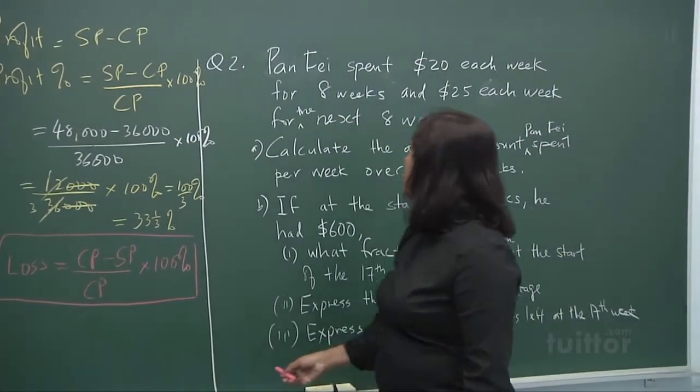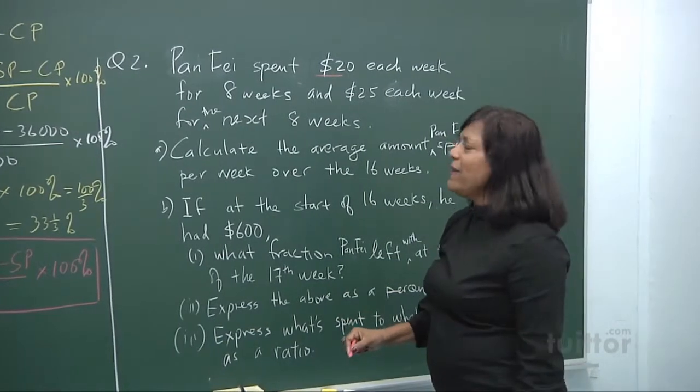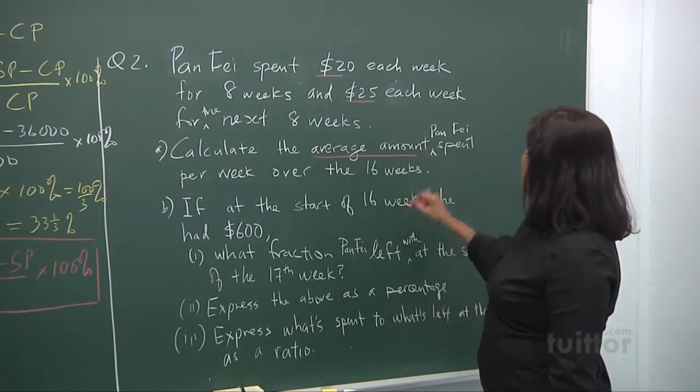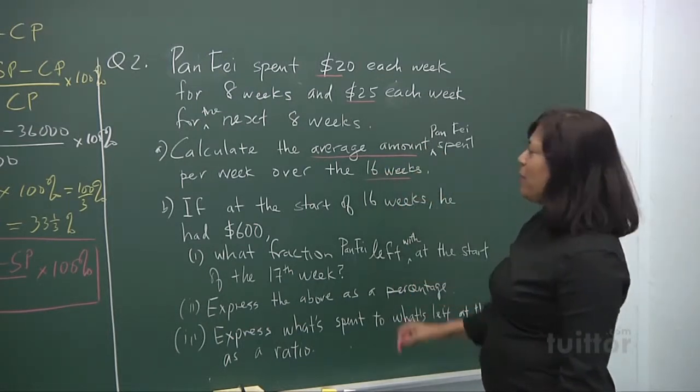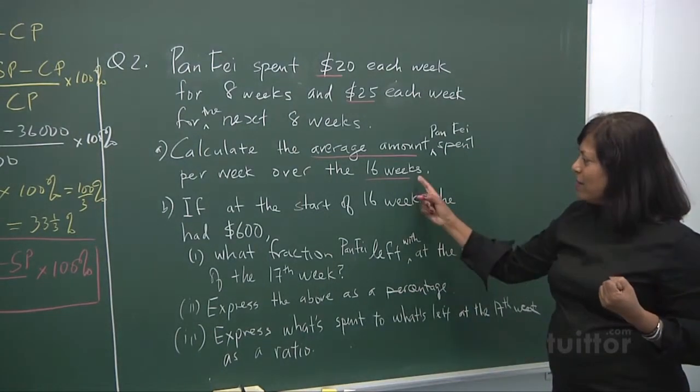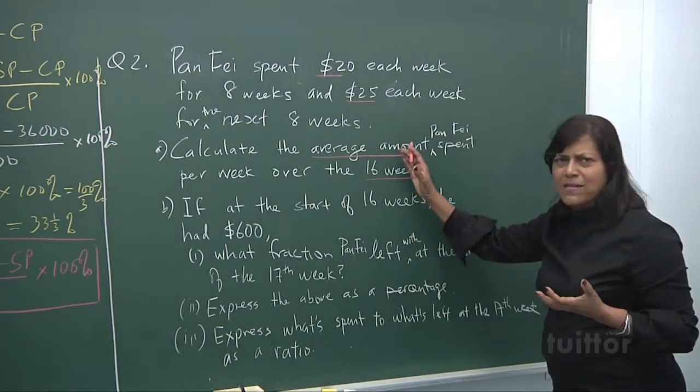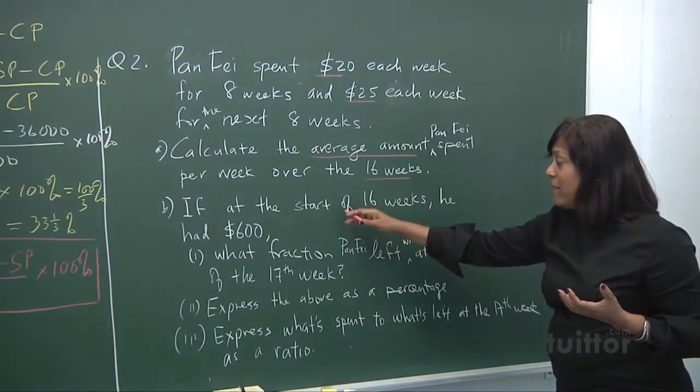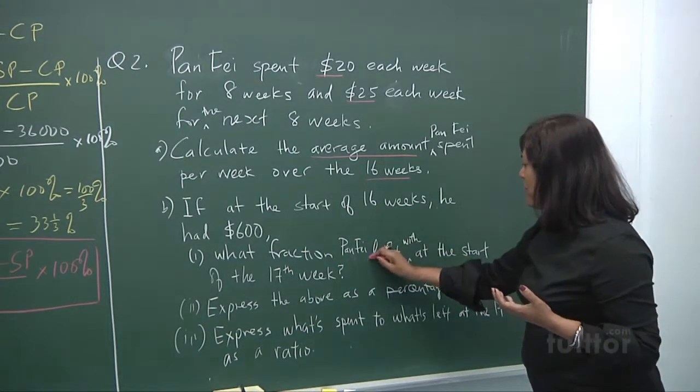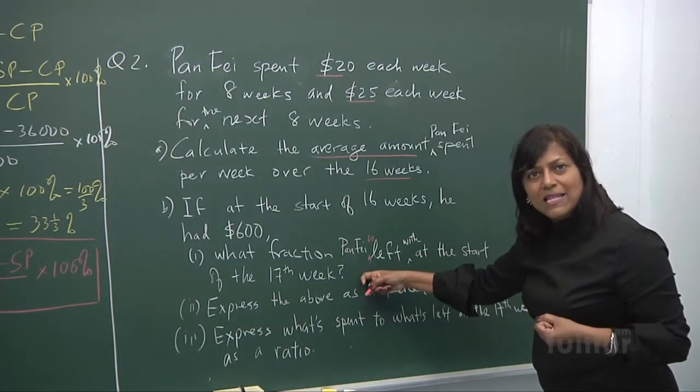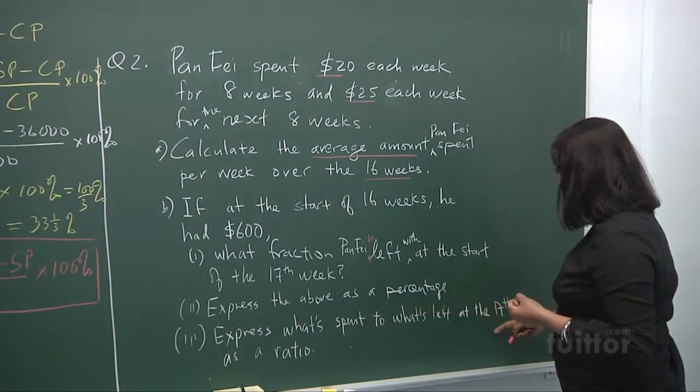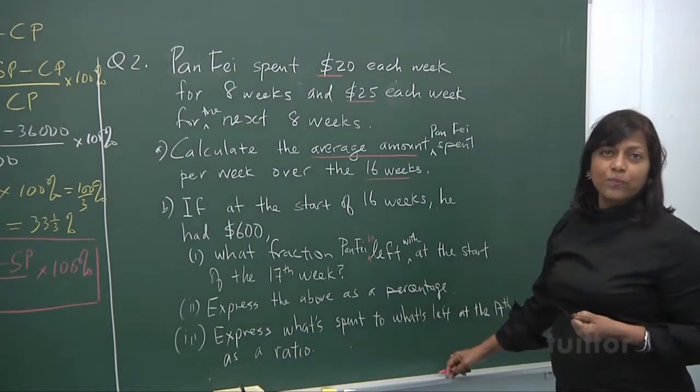Pan Fei, right? Pan Fei spent $20 each week for 8 weeks and spend $25 for the next 8 weeks. Calculate the average amount Pan Fei spent per week over the 16 weeks. You'll find the total amount spent divided by 16. Okay. Let's look. From here, we move on here. But let's do this one first. Or if you want to carry on, I'll read here. If at the start of the 16 weeks, he has $600 start. What fraction Pan Fei is left with at the start of the 17th week. Express the above as a percentage. Express what's spent to what's left at the 17th week as a ratio. Now let's do it step by step.